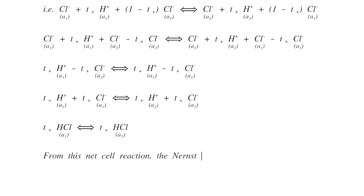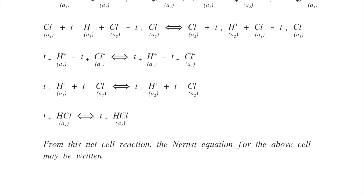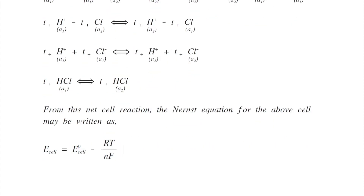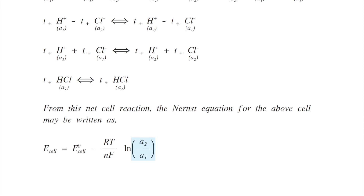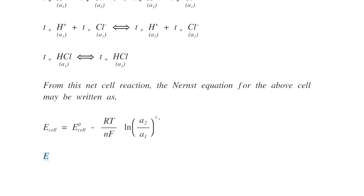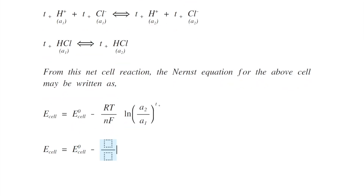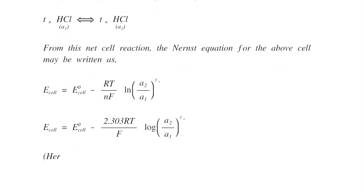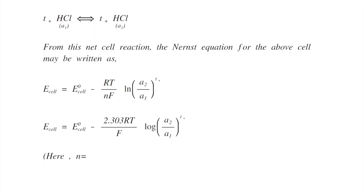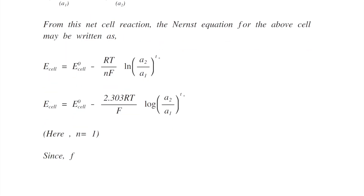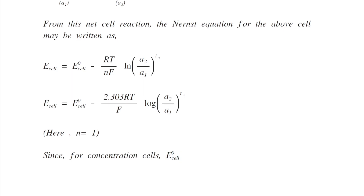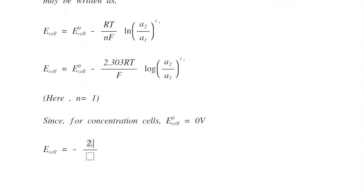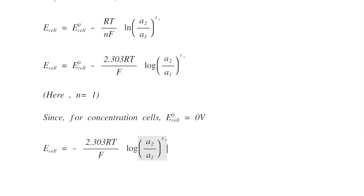From this net cell reaction, the Nernst equation for the above cell can be written as: E_cell = E°_cell − (RT/NF) ln(A2/A1)^T+, or E_cell = E°_cell − (2.303RT/F) log(A2/A1)^T+. Here N is replaced with 1 as only one electron is involved. Since for a concentration cell both electrodes are the same, E°_cell = 0 V. Therefore, E_cell = −(2.303RT/F) log(A2/A1)^T+.